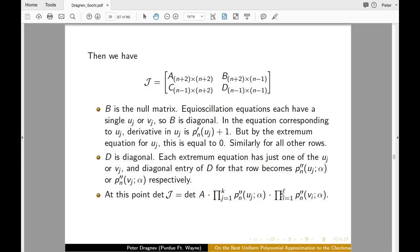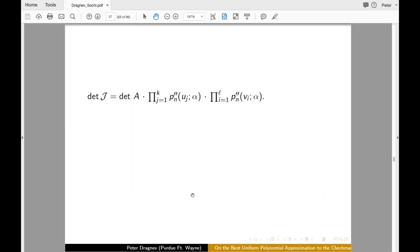That ends up being zero from the extremum equations. So that is why B is just the zero matrix. D is diagonal. And it's actually the second derivatives of the best approximant. And this is the formula for the determinant. Because that's zero, that's the diagonal. These are the products of these second derivatives. And at them, they're either positive or negative, depending on whether U_j or V_i is local minimum or local maximum. But they are not zero.